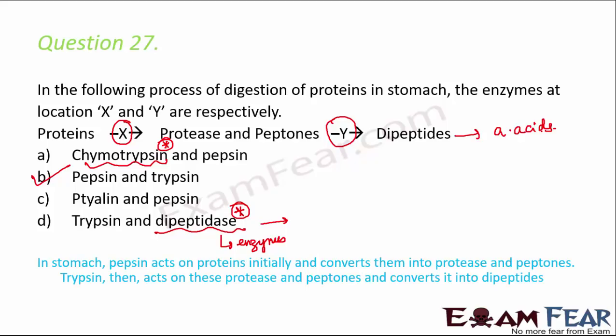A quick recap: in the stomach, pepsin acts on proteins initially and converts them into proteases and peptones. Trypsin then acts on proteases and peptones and converts them into dipeptides.